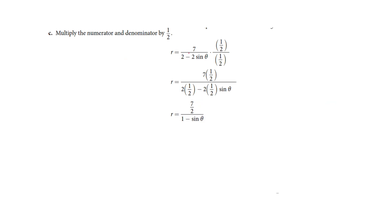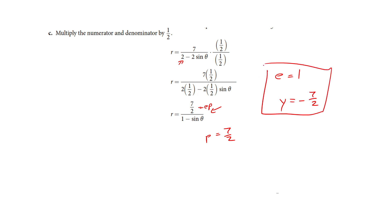For the third example, we multiply top and bottom by one half so the denominator becomes 1. This gives us standard form. We have sine in the denominator, so the directrix is y and it has a negative in front. The eccentricity — the coefficient in front of the sine function — is equal to 1. Because E is 1, and the numerator equals E times p, we automatically know p is also seven over two. That gives us everything we need: E equals 1 means this is a parabola.